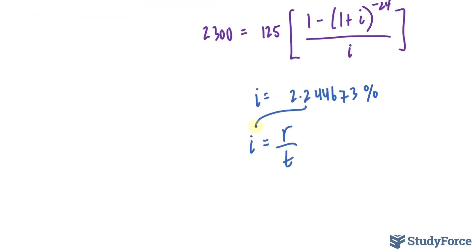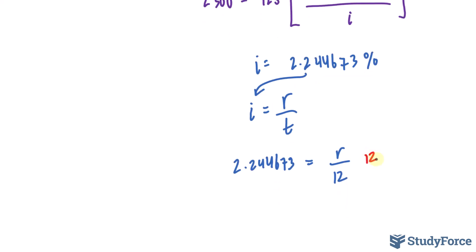So we have that value placed into there. 2.244673 is equal to R over T being 12. Multiplying both sides by 12 gives us the nominal rate.